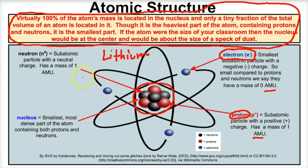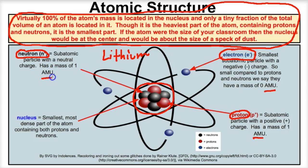We also have the neutron. Neutrons are another subatomic particle that have no charge at all — their charge is neutral. However, they do have a mass of one AMU.